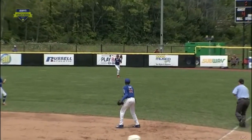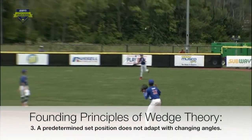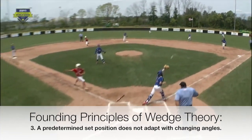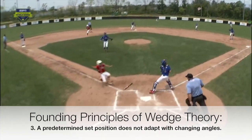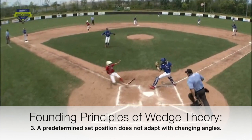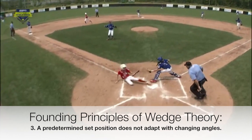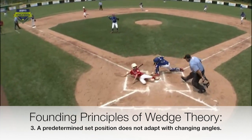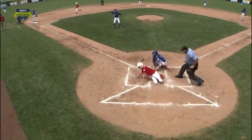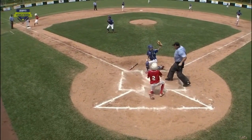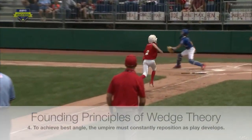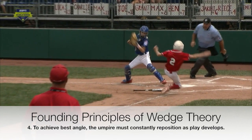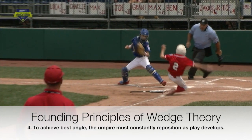If the two variables of the play are constantly moving, causing angles to change, then a predetermined set position by the umpire does not allow us to adjust with the changing angles as dictated by the developing play. In order to achieve optimum positioning, the umpire must constantly reposition to keep his head and eyes between the plate-side hip of the fielder and the runner.